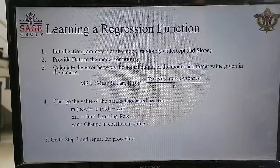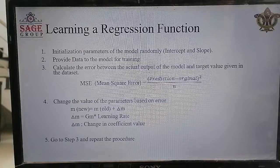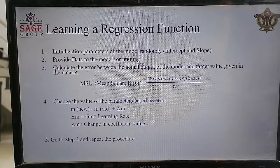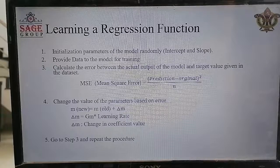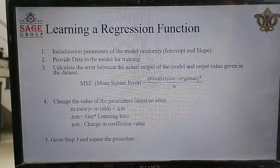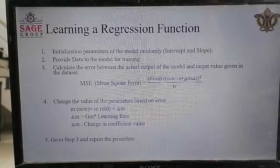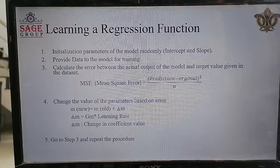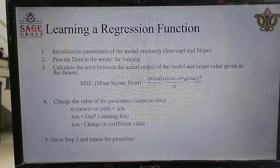This is the whole algorithm of linear regression: we initialize the model parameters randomly, then using the data we calculate the mean square error. After finding the error, we calculate the gradients, and after finding the gradients we modify the values of the model parameters. This process repeats again and again until the model converges. That is the whole process of linear regression — thank you for today's session.